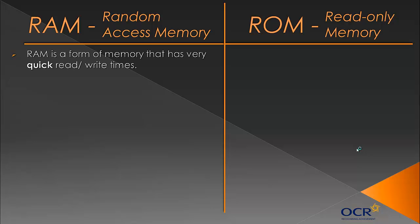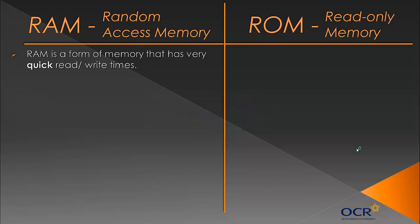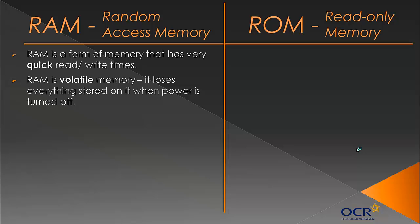RAM is a form of memory that has a very quick read/write time. Read/write time means how quickly things can be accessed from it and how quickly things can be stored on it. RAM is a quick form of memory — slower forms include hard disks, and faster forms may be a cache, which we'll look at in the next slide. RAM is a form of volatile memory, meaning it loses everything stored in it when power is turned off.